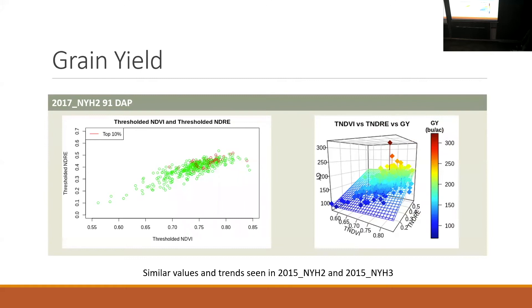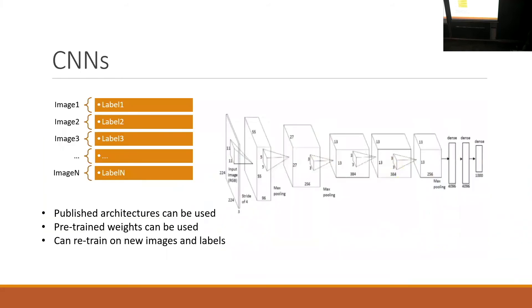Yield tends to cluster at the higher ends of these vegetative indices. Since this is only phenotypic, we need to calculate heritabilities and improve our models. What I'm excited about is trying to use CNNs to directly learn the features from the images. As Travis showed, a CNN has an architecture that defines the different filters and layers within it.